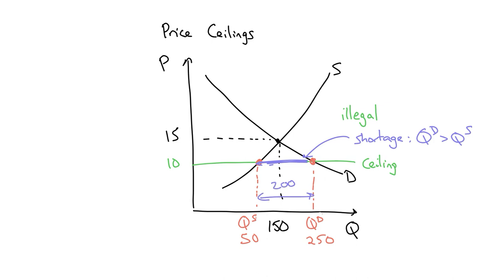So my answer would be A, a shortage of 200. It's not 250 because even though 250 are demanded, 50 are still supplied.